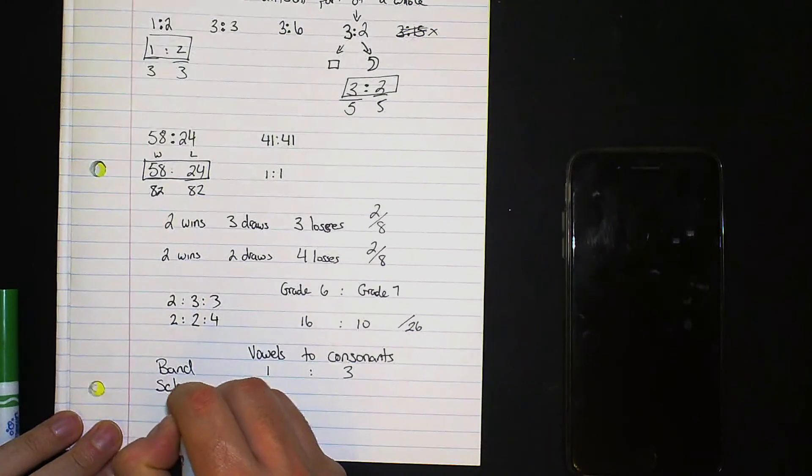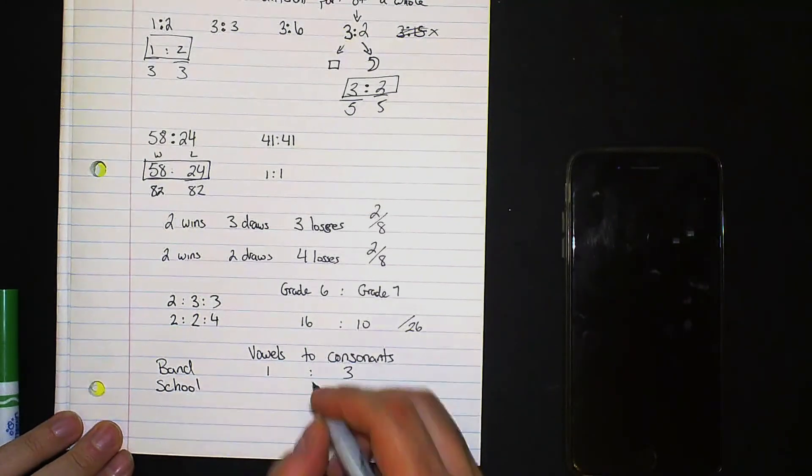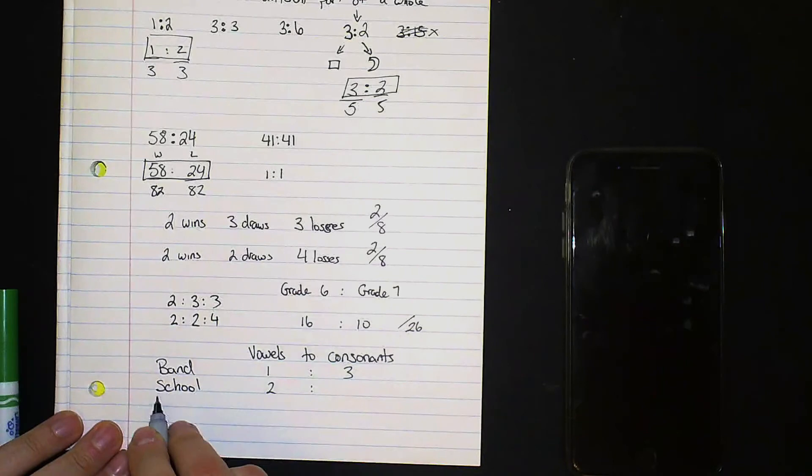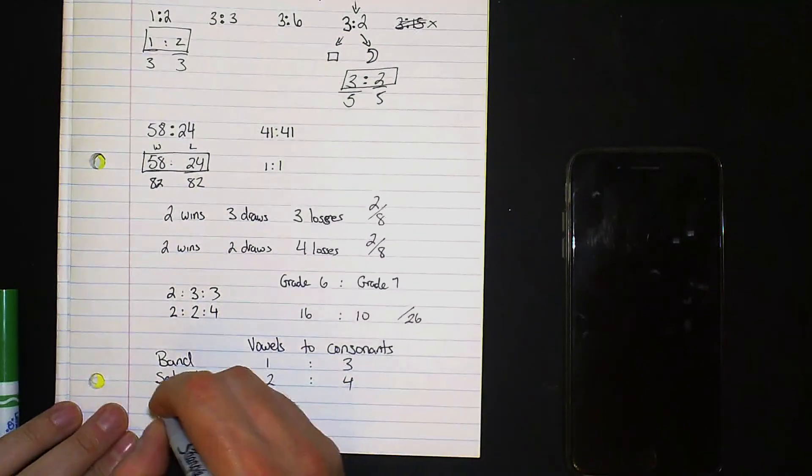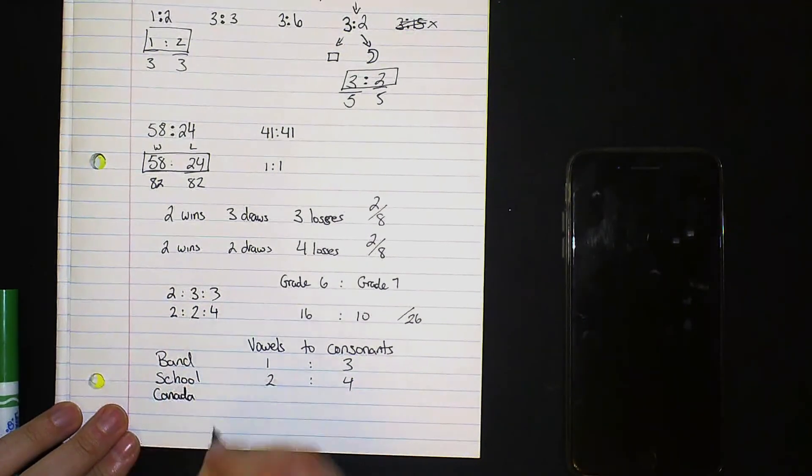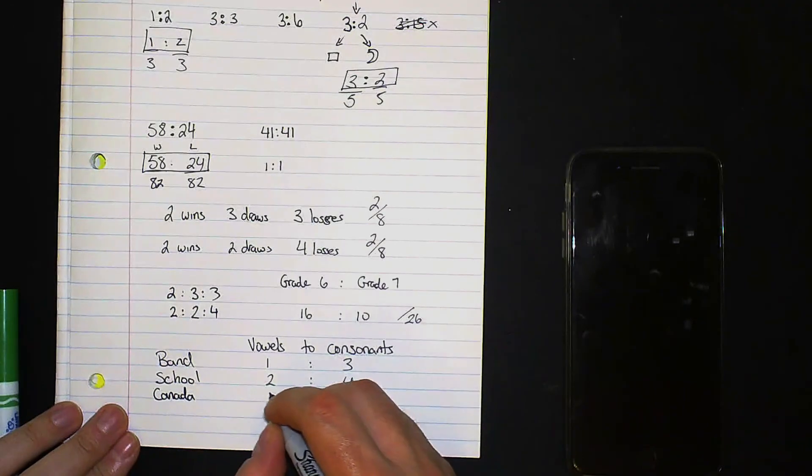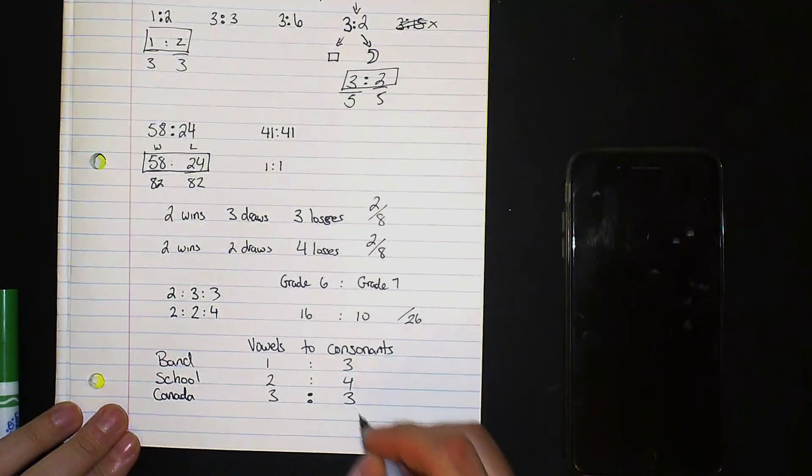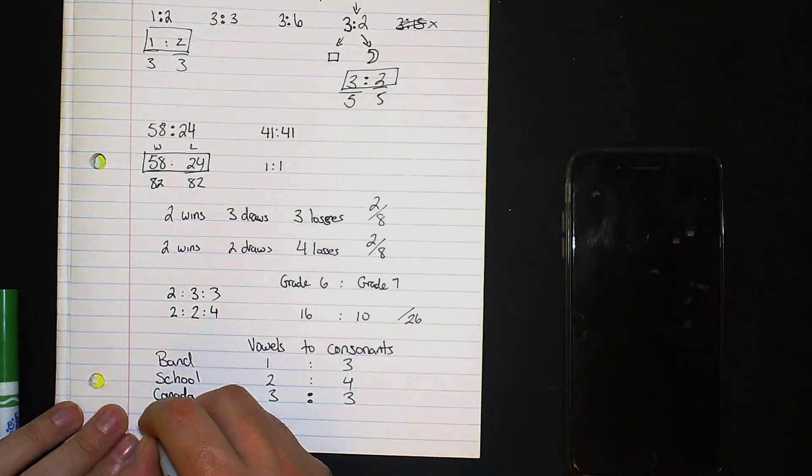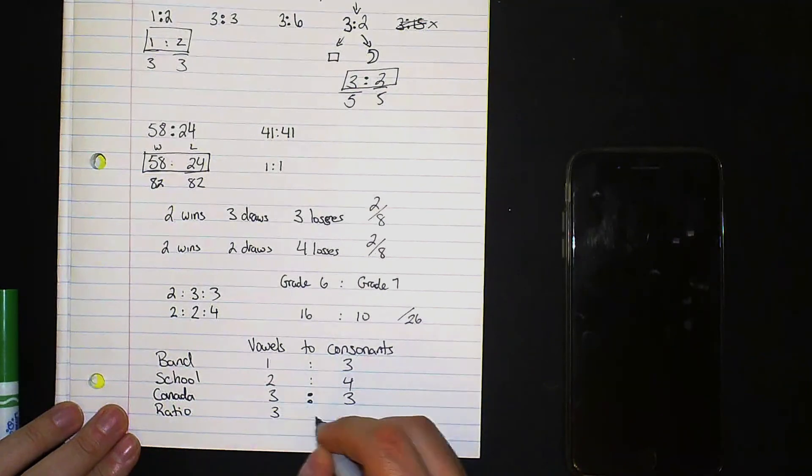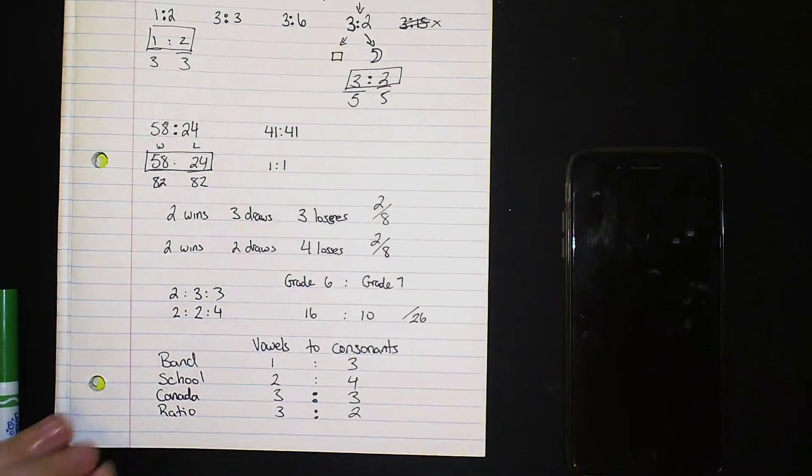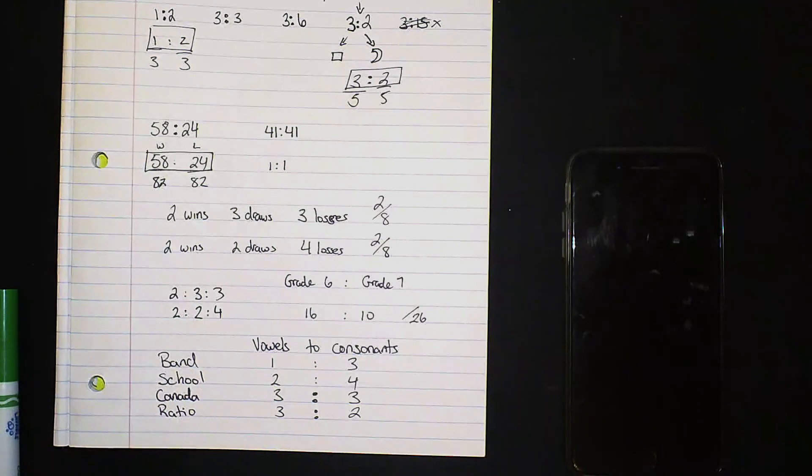To take the word school, there are two vowels here, one, two, three, four consonants and we know that there are six letters in this word. If we take Canada, three vowels, three consonants. Even if we took the word ratio, one, two, three, and there's two consonants. So this is our mini lesson on ratios. I will have another video to explain other things about ratios so I will see you in the next video, bye bye.